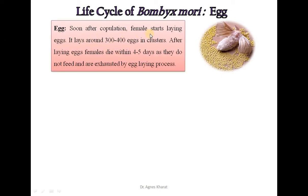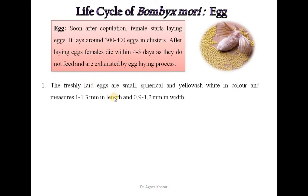The first stage is the egg. Soon after copulation, the female starts laying eggs. It lays around 300 to 400 eggs in a cluster. After laying eggs, females die within 4 to 5 days as they are exhausted by the egg-laying process, since these adult females do not feed. The freshly laid eggs are small, spherical and yellowish-white in colour, measuring around 1–1.3 mm in length and 0.9–1.2 mm in width.